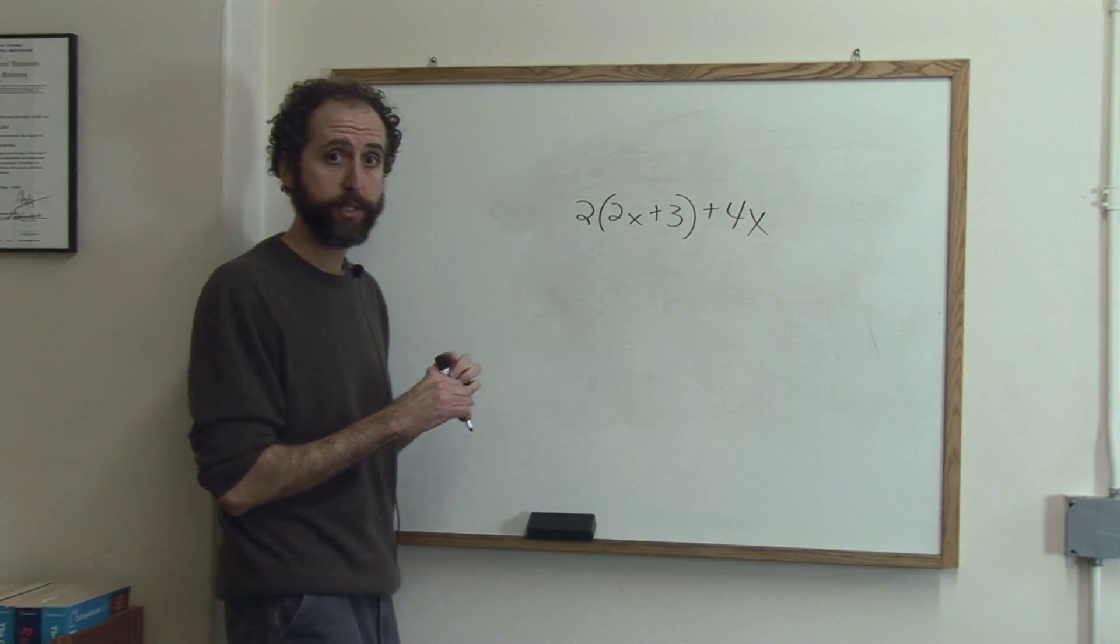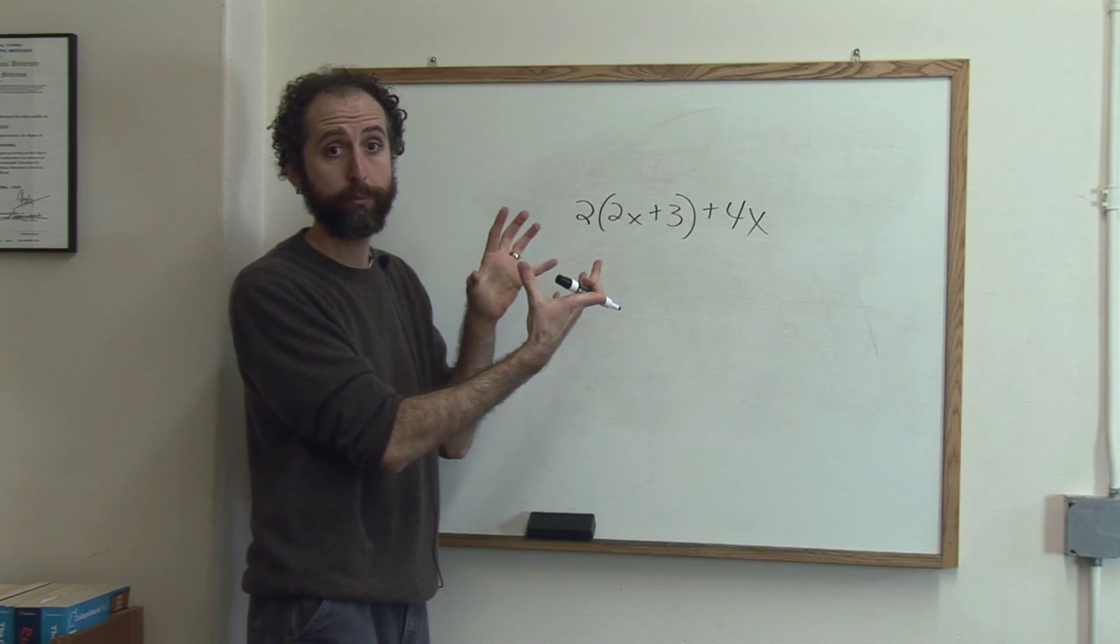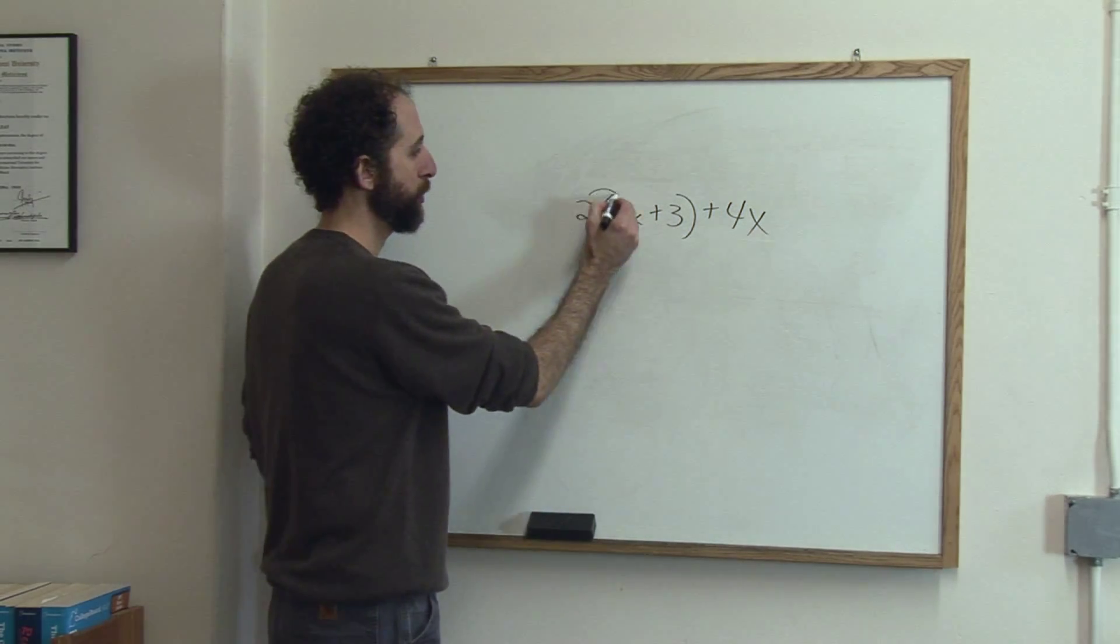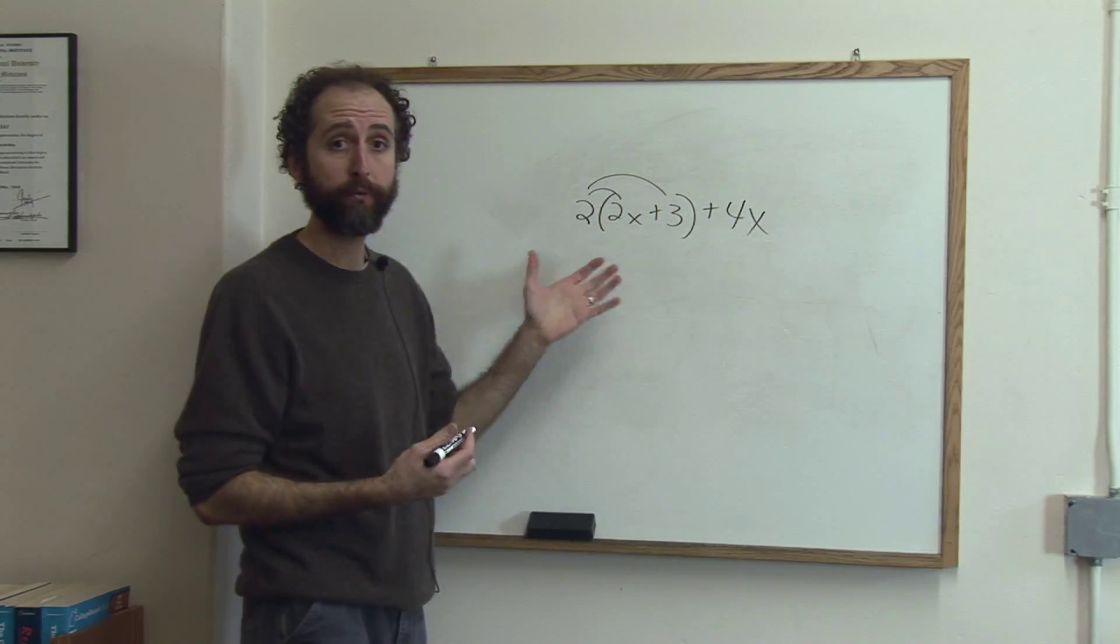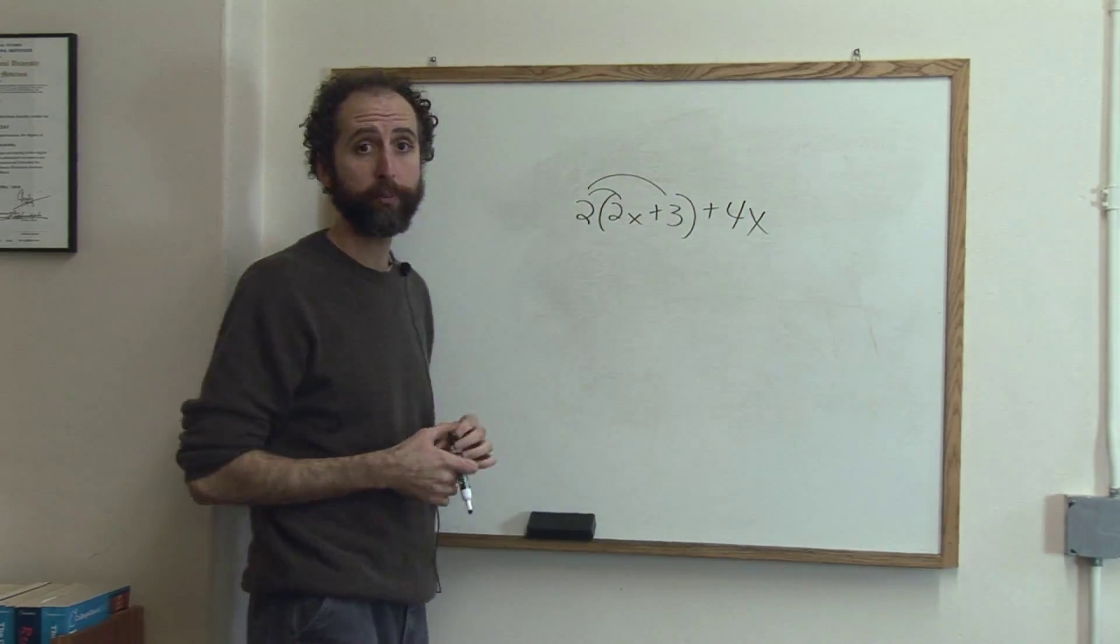So if we want to simplify this, we want to basically collect like terms. The first step is we're going to distribute. It's kind of like order of operation. You have to do multiplication before you do addition. And distributing is a form of multiplication.